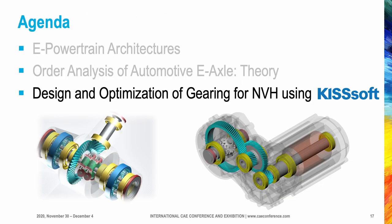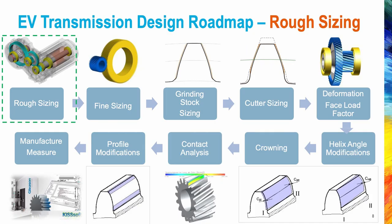I will now introduce the design and optimization of gearing for NVH using Keysoft. We start by sizing the center distance and face width for each individual gear stage, then find the optimal micro geometry of the meshing — module, pressure angle, helix angle, and so on. As case-hardened gears are used for e-axles, distortions after hardening may require designing a grinding stock for a hard finishing process. System deformation is then calculated, influencing the gear contact pattern, and micro modifications such as helix angle correction and crowning are designed to optimize it.